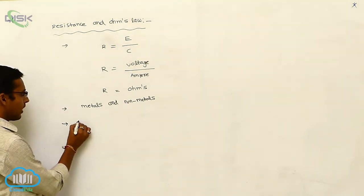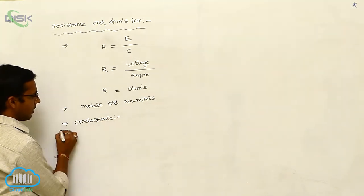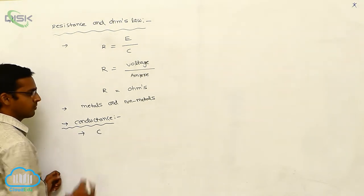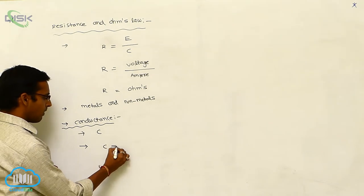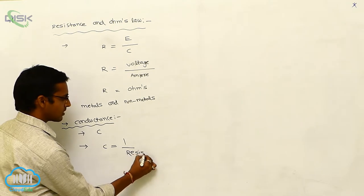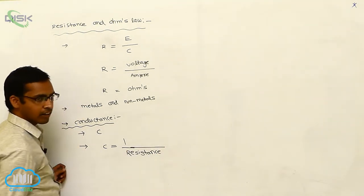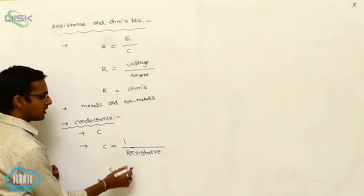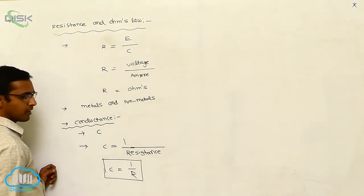The second one is conductance. Conductance is denoted with C. Conductance means the reciprocal value of resistance. The reciprocal value of resistance is called as conductance or conductivity. The resistance is denoted with R, so conductance means 1 by R.